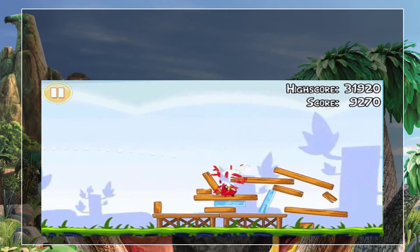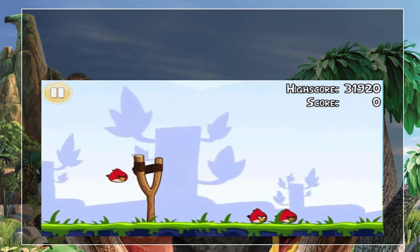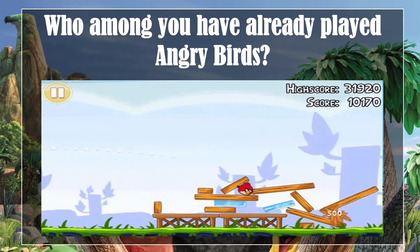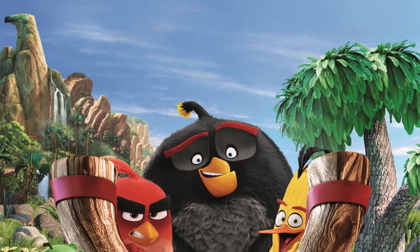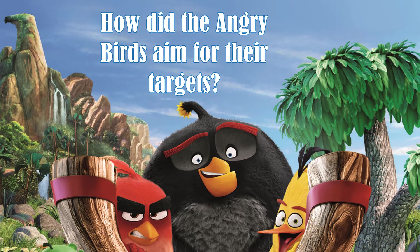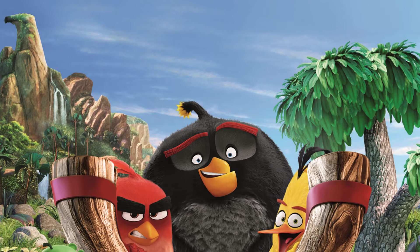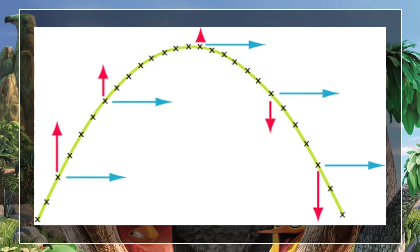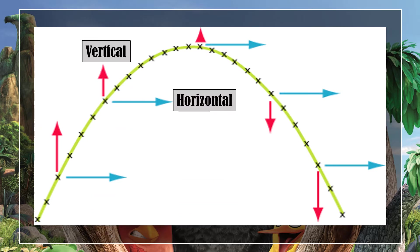To give you a glimpse of introduction to our lesson, we have this question: Who among you have already played Angry Birds? How did the Angry Birds aim for their targets? Did they aim for a straight path or a curved path? Surely a curved path. In a curved path, there are two vector components present: the horizontal velocity and the vertical velocity.